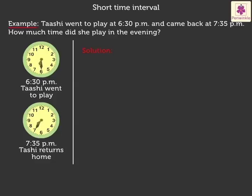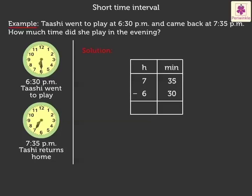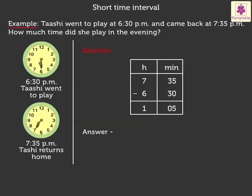Here, to find the Time Interval of the activity, we subtract the starting time, i.e. 6.30pm, from the ending time, i.e. 7.35pm, to get the answer. On subtracting, we get the answer as 1 hour, 5 minutes. Thus, we can say that Tashi spent 1 hour, 5 minutes playing in the evening.